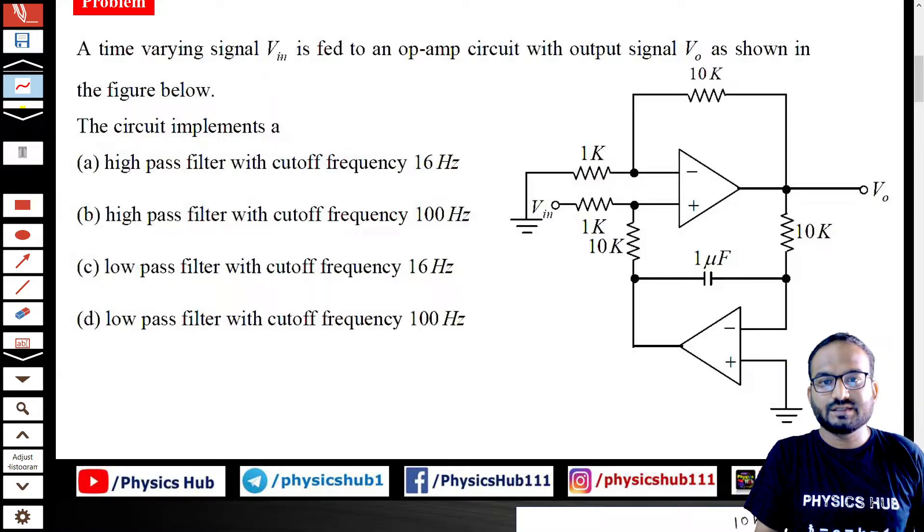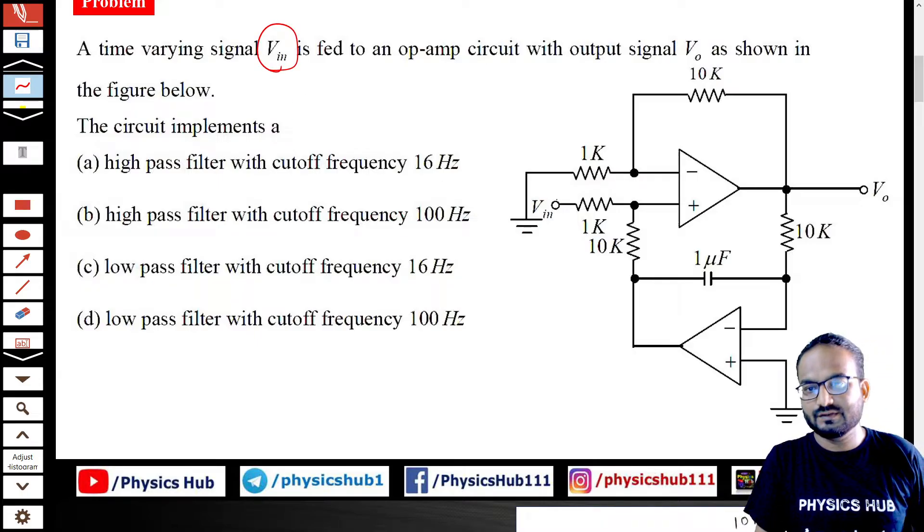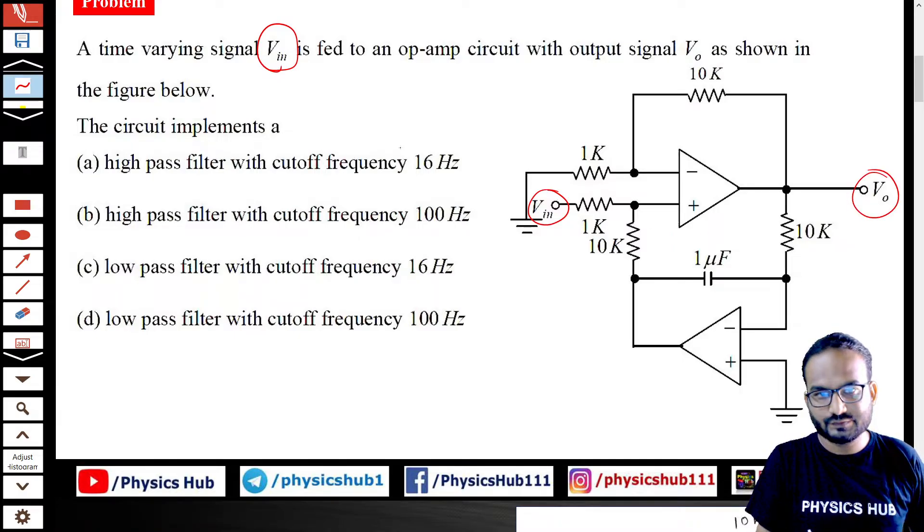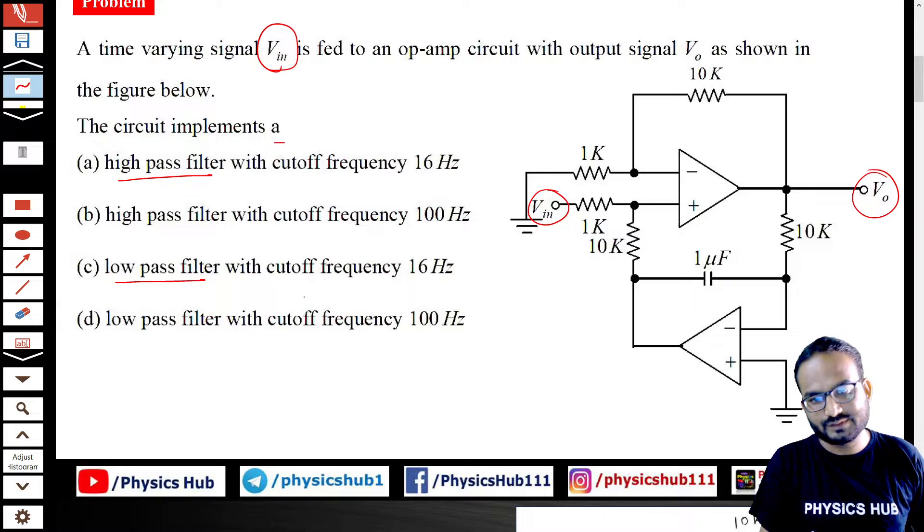A time varying signal V_in is fed to an op-amp circuit with output signal V_0, as shown in the figure below. The circuit implements either a high pass filter or low pass filter with different cutoff frequencies given to you.